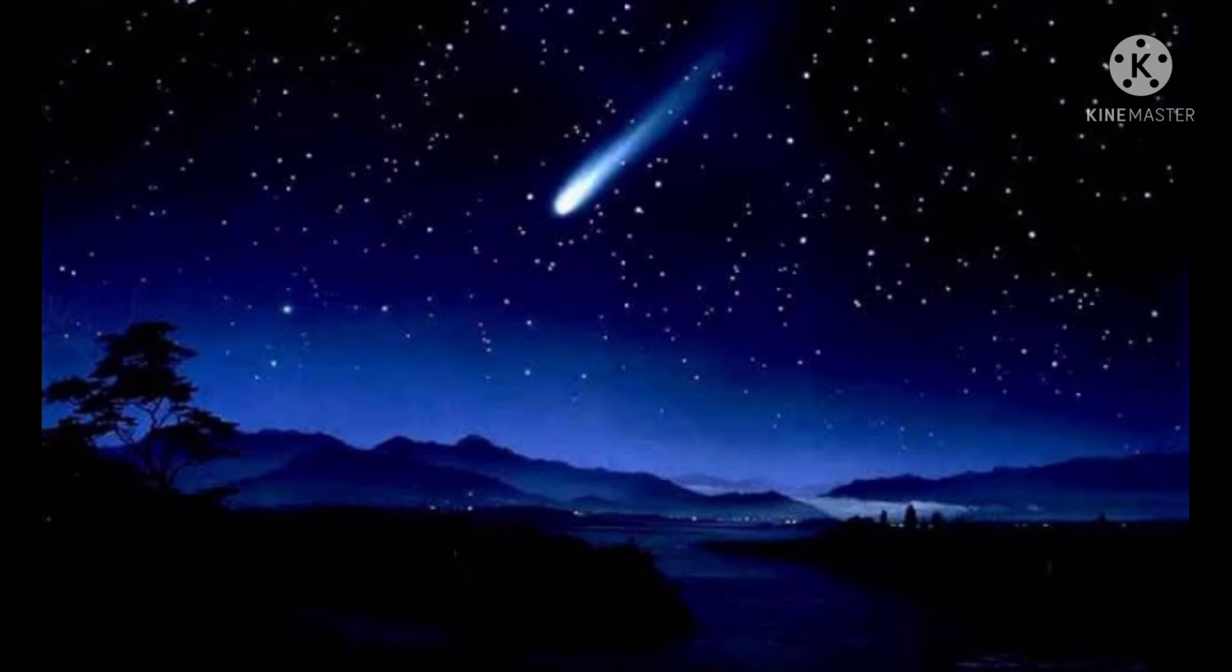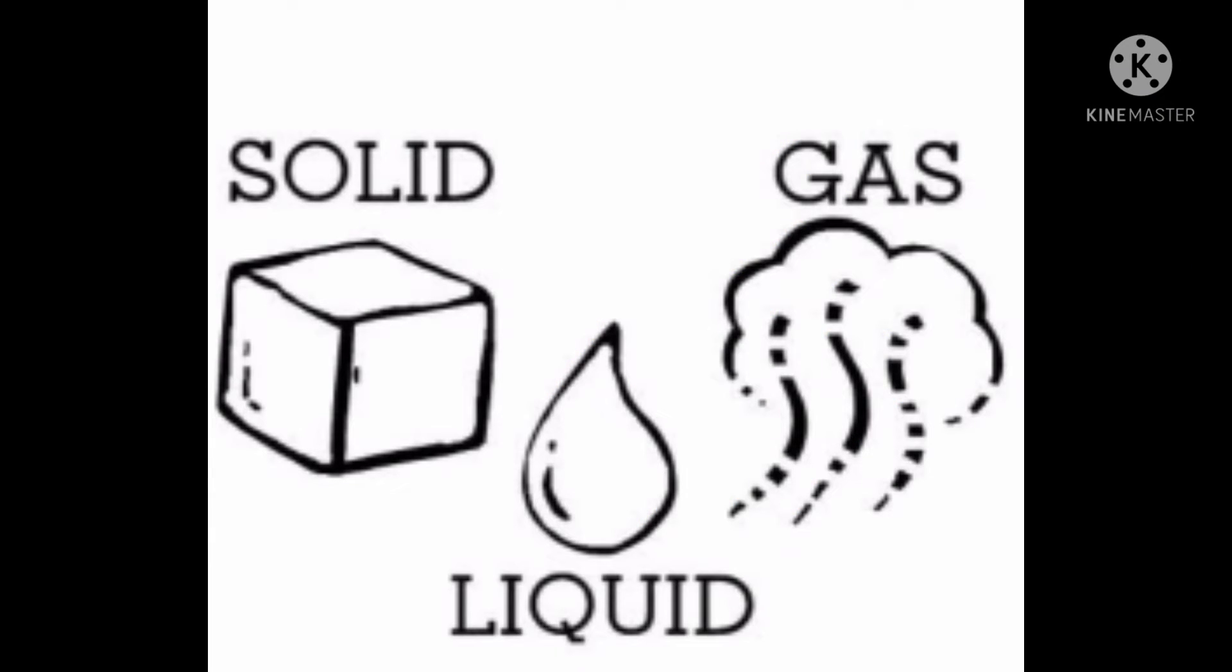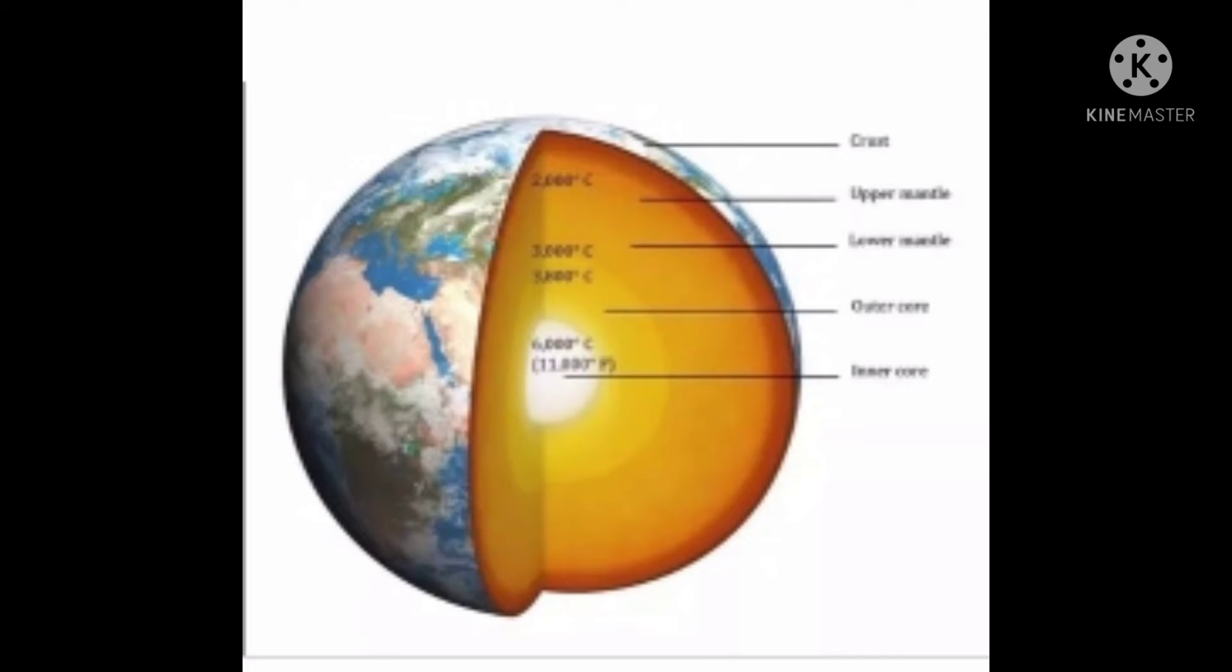The Earth is the only planet in the solar system to have three forms of water: liquid, gas, and solid. The Earth's core is composed of iron and nickel. This composition, combined with the Earth's rotation, has led to the Earth possessing a very strong magnetic force.